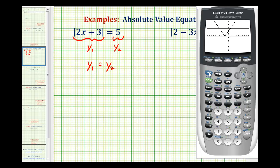So we'll press second trace for calculate, and then option 5 for intersection. We'll move the cursor closer to the point we want to find first. It can only find one point at a time. And now I'm going to press enter for the first curve, enter for the second curve, and enter for the guess.